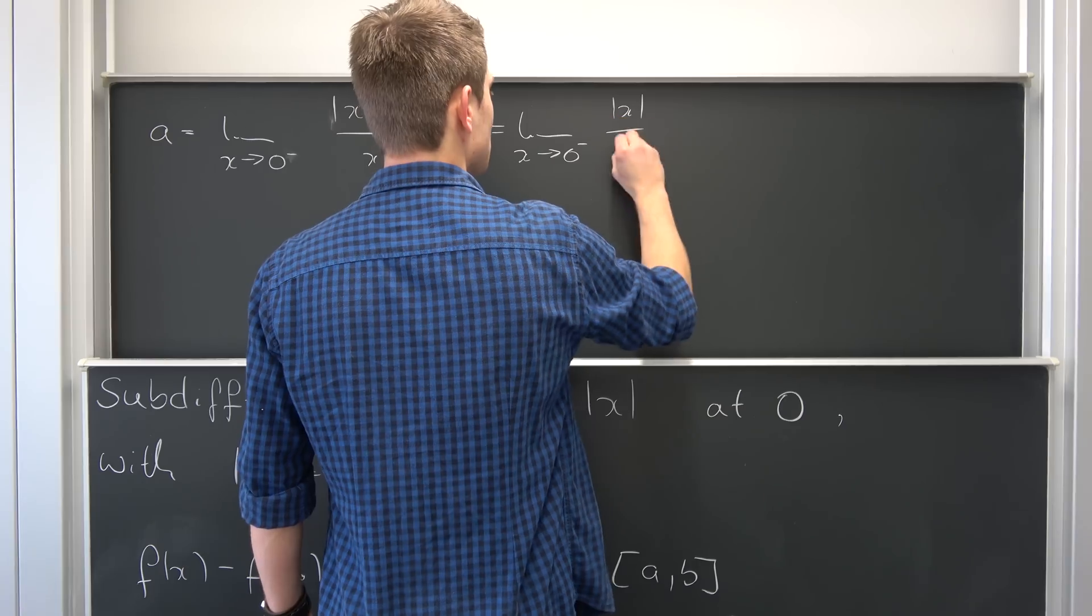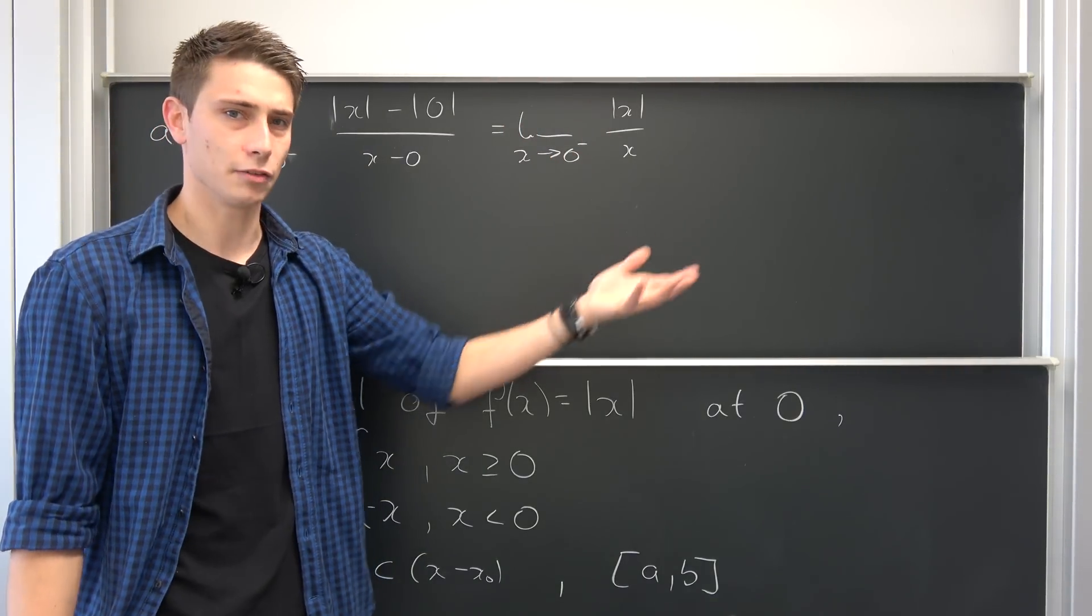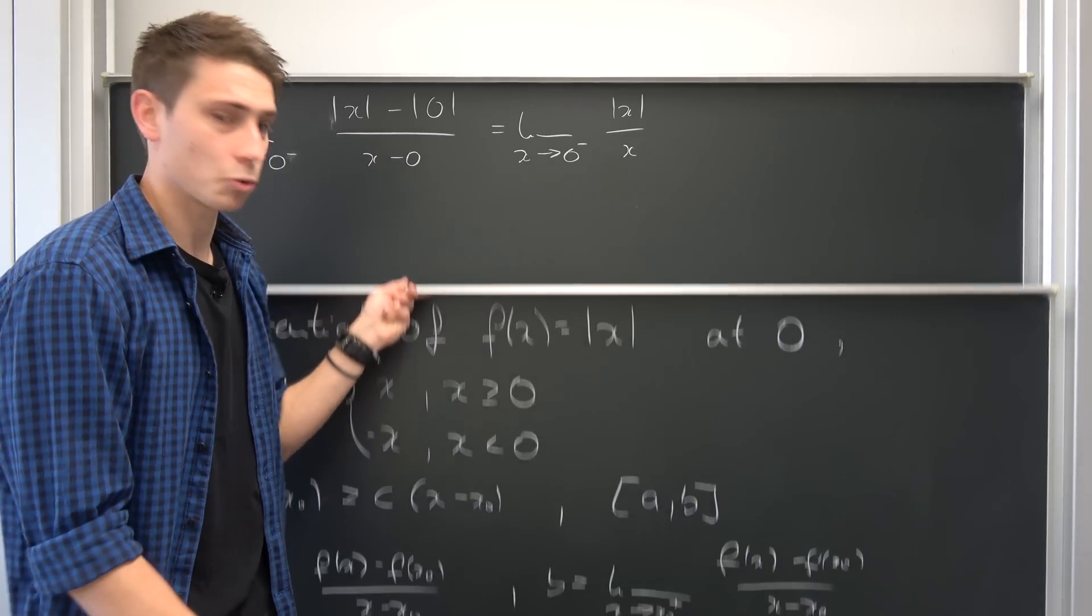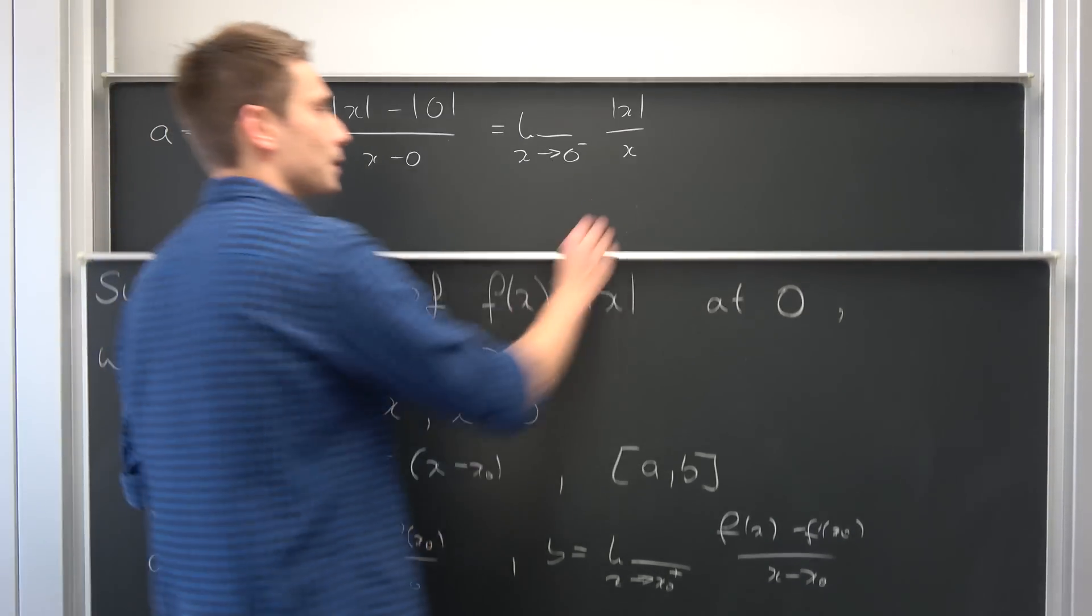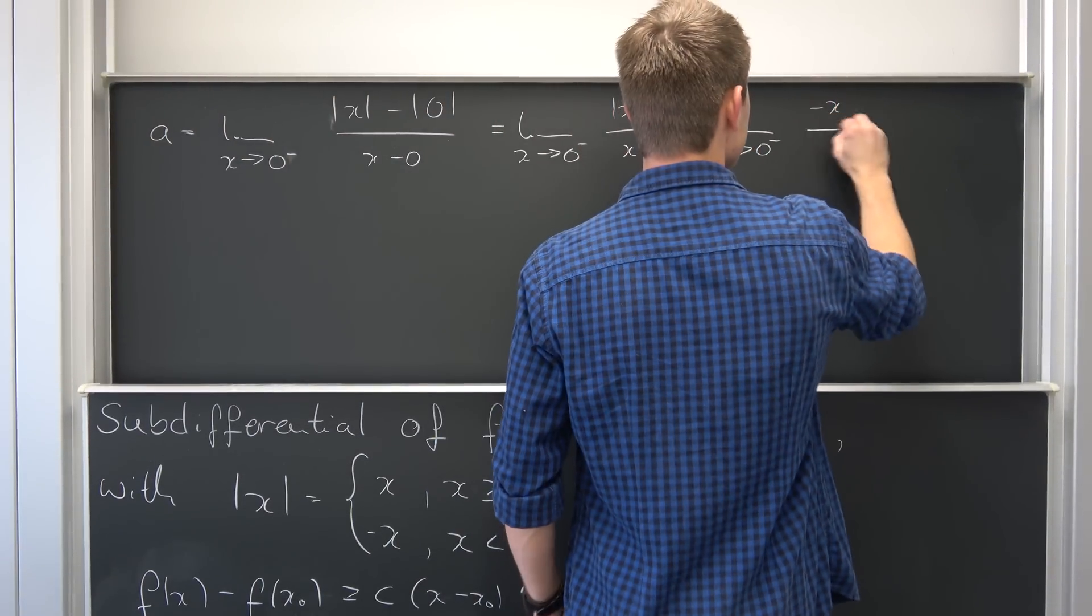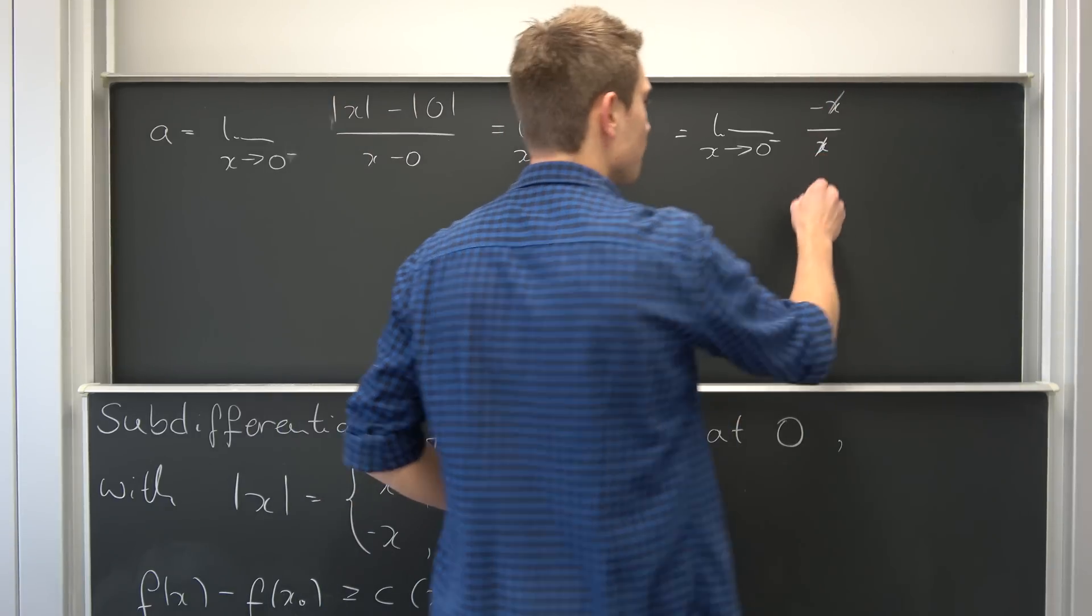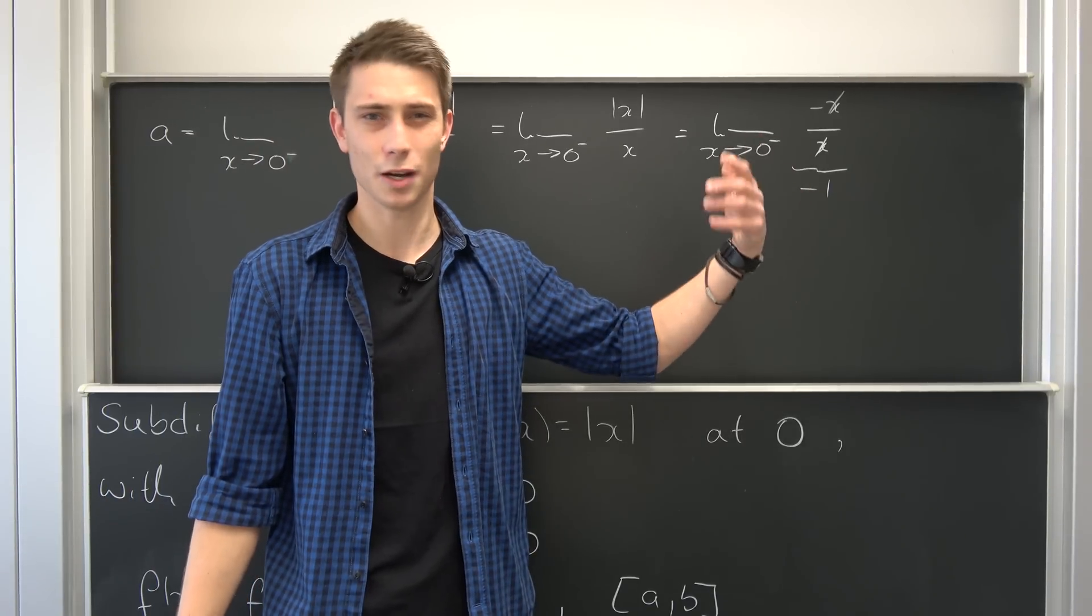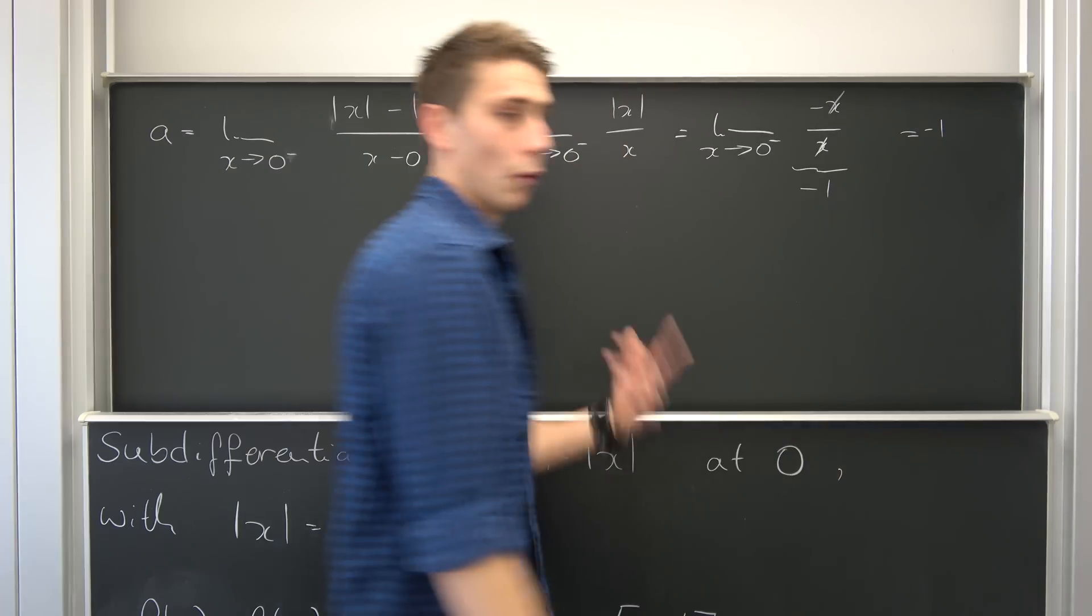At the moment our x only has negative values to offer, so we approach it purely from the negative side. What happens if all our x values are negative? We get -x. So this is the limit as x approaches zero minus of -x/x. And you see, x and x cancel out to -1. If we take the limit of -1, of any constant, it's just the constant itself. So our lower bound a is -1.